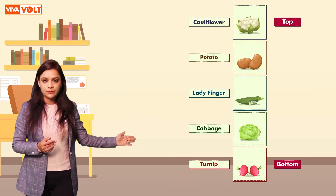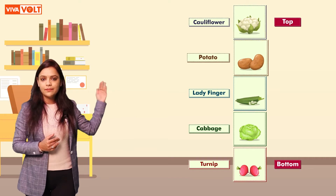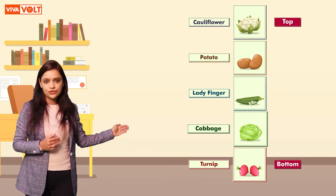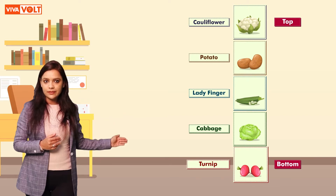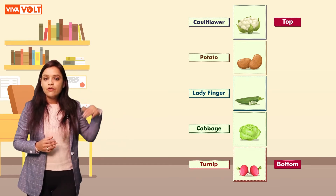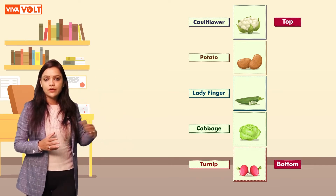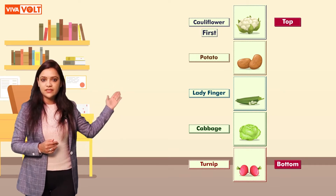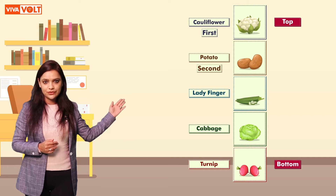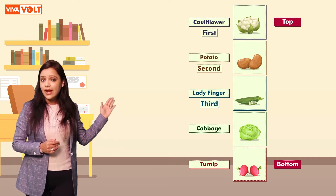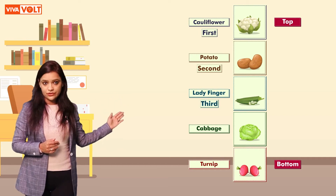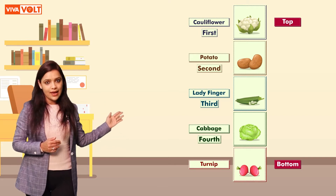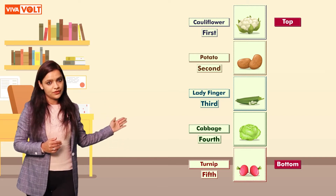Now look at the position of the vegetables from top to bottom: Cauliflower, Potato, Ladyfinger, Cabbage, Turnip. From top to bottom, Cauliflower is at the first position, Potato at the second position, Ladyfinger at the third position, Cabbage at the fourth position, and Turnip at the fifth position.